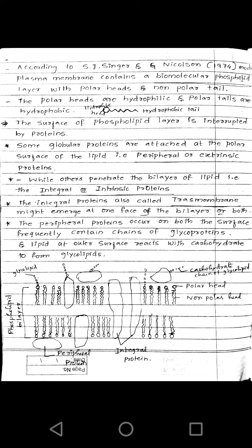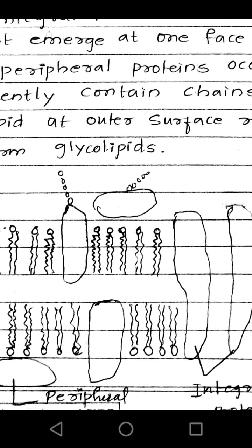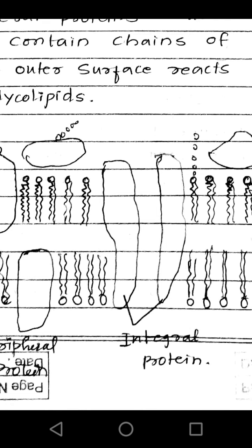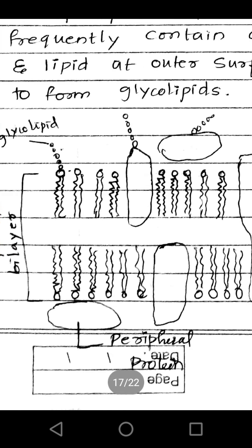Some globular proteins are attached at the polar surface of the lipid — those are peripheral or extrinsic proteins. Intrinsic proteins are embedded inside the phospholipid bilayer, whereas the extrinsic or peripheral proteins are present outside the phospholipid bilayer and are attached to the polar heads of the bilayer.